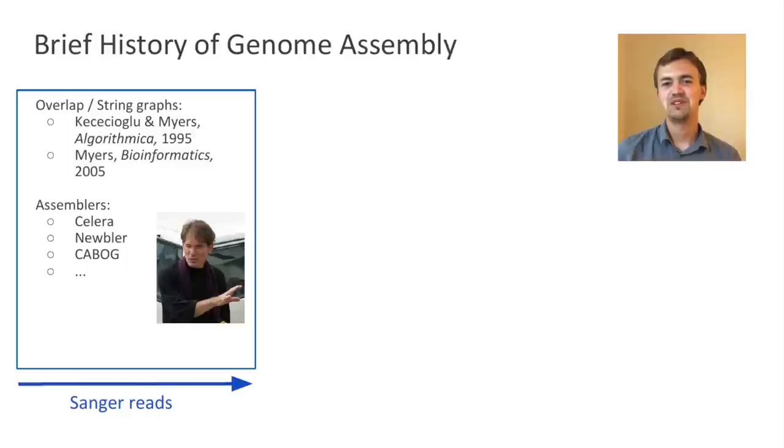And I want to start from a brief history of the topic. In Sanger sequencing era, overlap graphs appeared as a very intuitive approach. If you have two reads that overlap, then you put an edge between the corresponding nodes in the graph. And this gave rise to numerous assemblers such as Celera or CABOG, and some of them are still being used in the present days.